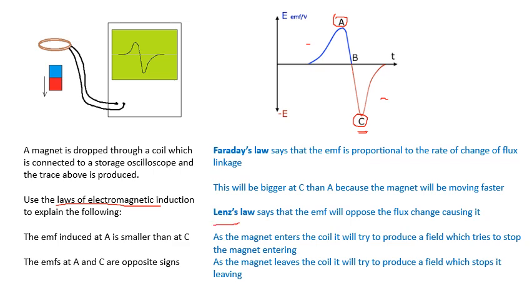Lenz's law. Say what Lenz's law is. Lenz's law says the EMF will oppose the flux change causing it. And so when the magnet is coming into the coil, we'll get an EMF in one direction. And when the magnet is leaving the coil, we'll get an EMF in the opposite direction because of Lenz's law. Because it will try to stop it coming in and then it will try to stop it leaving.